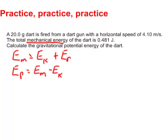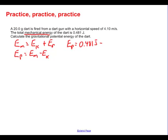The potential energy equals the mechanical energy, which is 0.481 joules, minus the kinetic energy, which is mv squared divided by 2. The mass is 20 grams — we need to convert that to 0.020 kilograms. Then multiply by the velocity, 4.10 meters per second, squared, and divide the whole thing by 2.